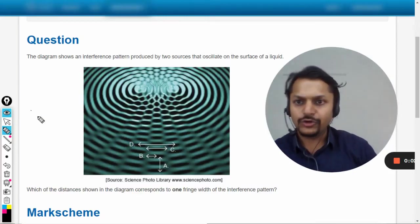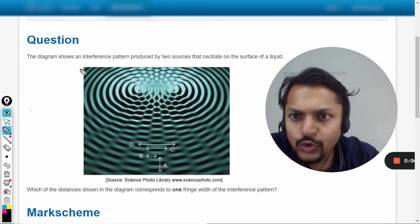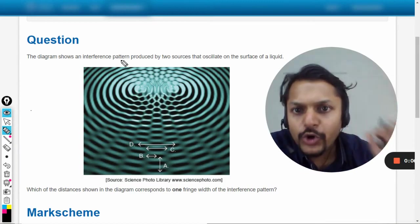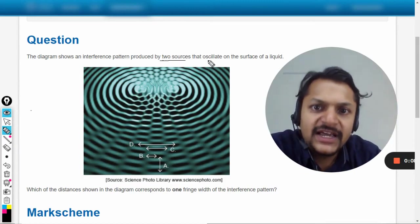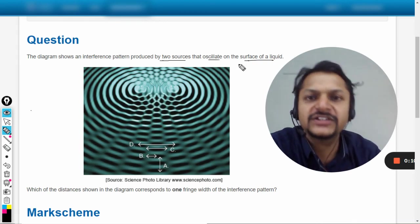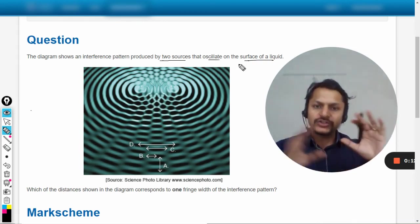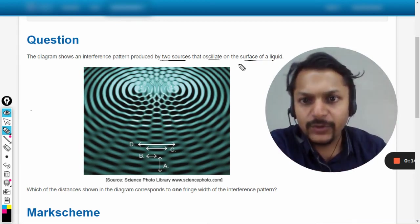Okay dear students, let us see how to do this question. The diagram shows an interference pattern produced by two sources that oscillate on the surface of a liquid.